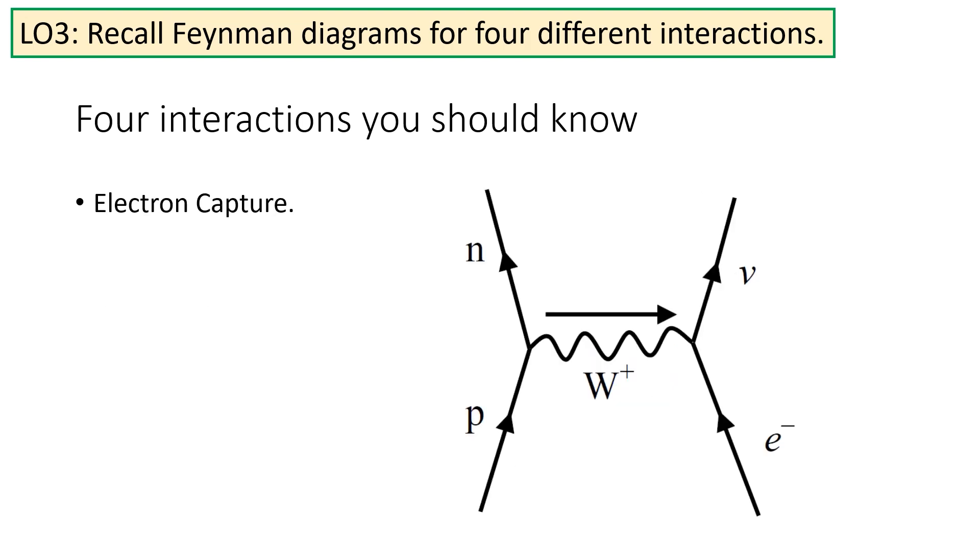Here's the Feynman diagram for electron capture. With electron capture, we actually start with two particles, a proton and an electron. They interact through the weak interaction and we get a neutron and the emission of a neutrino. One important aspect to note is that the weak interaction with the W-plus boson takes place from left to right.